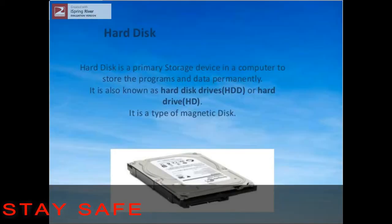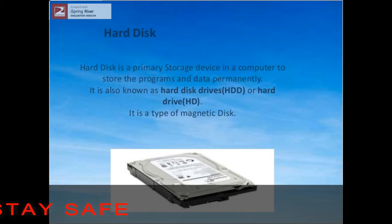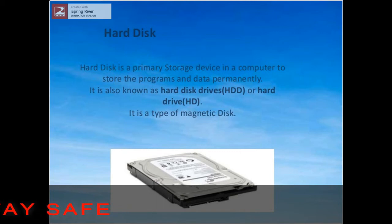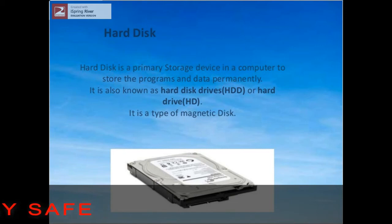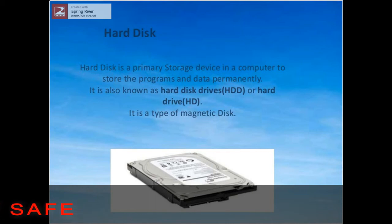First, hard disk. Hard disk is a primary storage device in the computer used to store the programs and data permanently. It is fixed inside the CPU box.